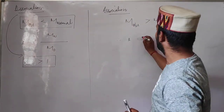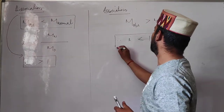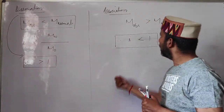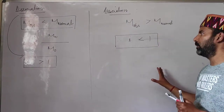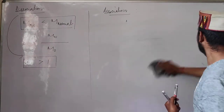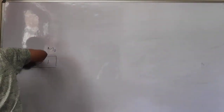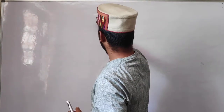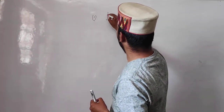In the case of association, the observed molar mass is greater than the normal molar mass. Since iota is the ratio of normal to observed molar mass, the numerator is less than the denominator, so iota will be less than one. This is a very important point: in the case of association, iota is less than one.